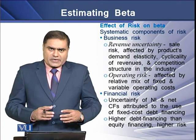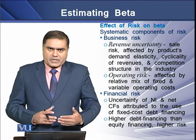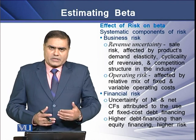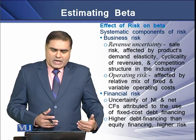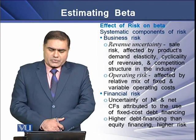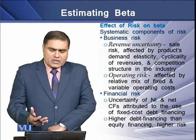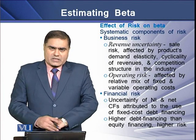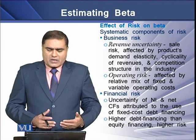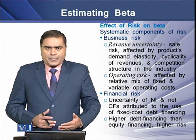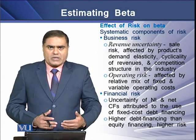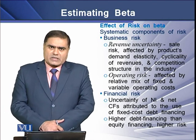There are certain risk factors that can have a significant effect on the value of beta. We can divide the systematic component of risk into two components: business risk and financial risk. Business risk can be further classified into revenue uncertainty — sales risk or operating risk. Sales risk occurs due to the demand elasticity of the product, cyclicity of revenue, and the nature of competition in the market.